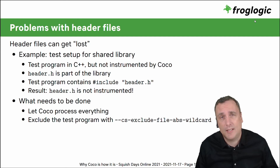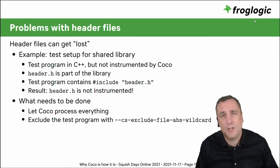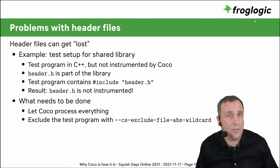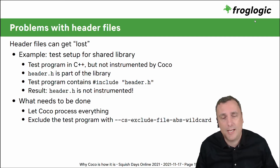There is one corner case worth noting: the potential for losing header file coverage if instrumentation is done incorrectly. If code in a header file is only called from your test executable and not from the main code base, and you restrict instrumentation to only the tested software, the header file may not get instrumented. We therefore recommend piping your whole source code base through Coverage Scanner, but excluding files you're not interested in via exclude switches — for example, masking files by absolute path using wildcard characters.